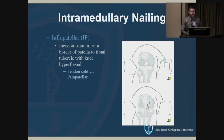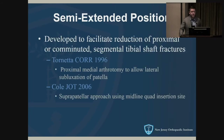For intramedullary nailing, you have multiple options. The infrapatellar approach is the classical one — inferior border of the patella, in line with the tendon — and you can do a tendon split for a parapatellar approach. A semi-extended position was first described by Tornetta in 1996, using a small medial arthrotomy. Cole in 2006 published the suprapatellar approach using a midline quad insertion site, which I use for most of my tibia nails at this point.